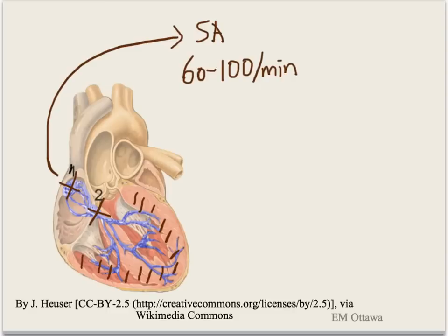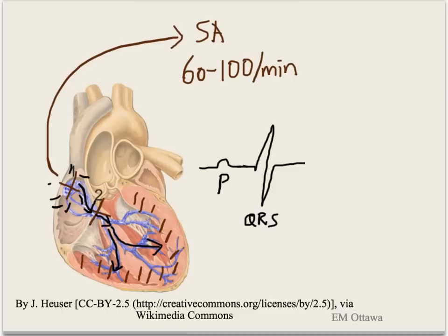Impulses originate from the SA node, causing the atrium to depolarize — that is the P wave. It then travels to the AV node and down the His-Purkinje fibers. It then splits into the left and the right bundle branches, causing ventricular depolarization. That gives you the QRS complex. T waves represent repolarization of the ventricle.